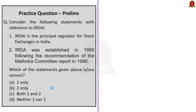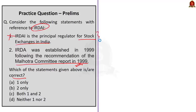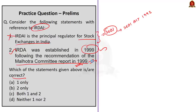The fourth question is about IRDAI: 'Consider the following statements with reference to IRDAI: Statement 1: IRDAI is the principal regulator for stock exchanges in India. Statement 2: IRDAI was established in 1999 following the recommendations of the Malhotra Committee report in 1999.' Statement 1 is wrong because the principal regulator for stock exchanges in India is SEBI — the Securities and Exchange Board of India established under the SEBI Act 1992. Statement 2 is correct because IRDAI was indeed established in 1999 following the recommendations of the Malhotra Committee report. So the correct answer is option B: two only.